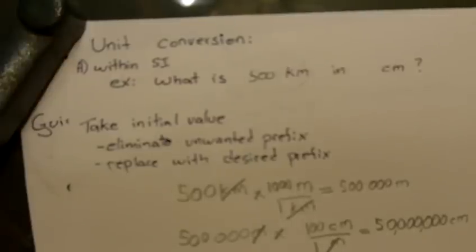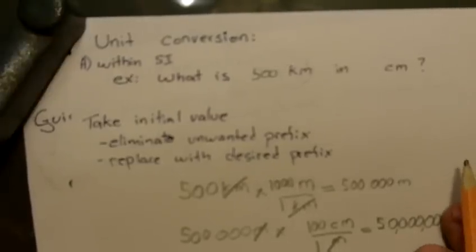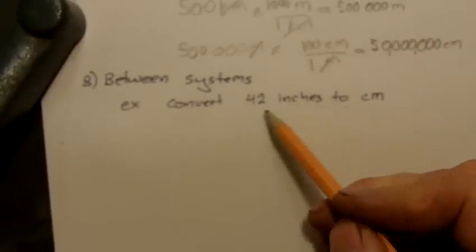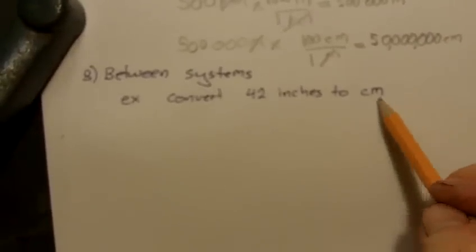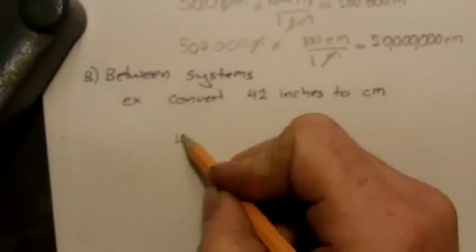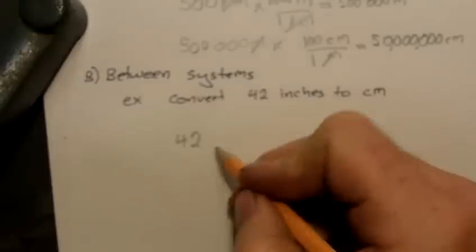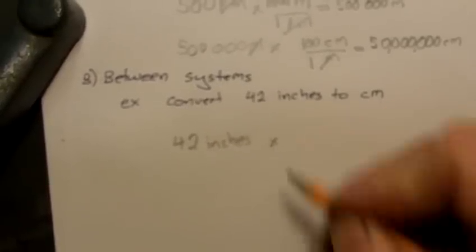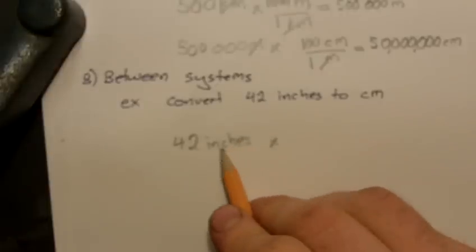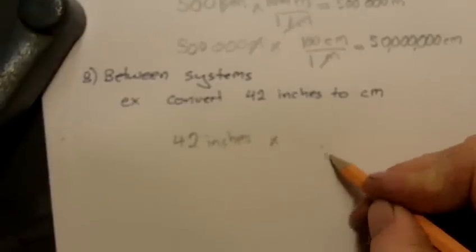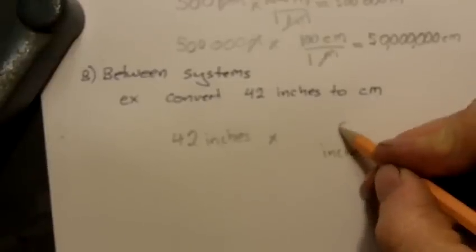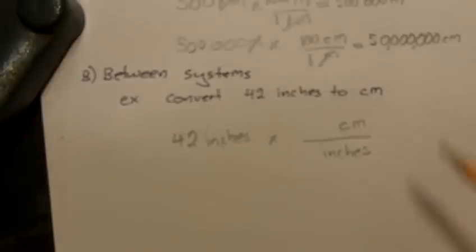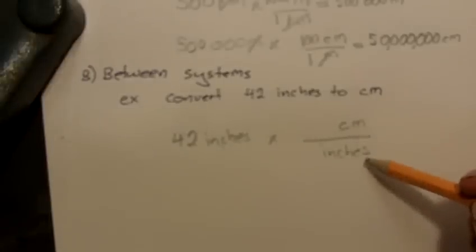Okay, so that's the relatively straightforward unit conversion. If we want to convert between systems, for example, if we want to convert 42 inches into centimeters, we do a very similar thing. We take our initial measurement. We multiply it by a fraction where the unwanted is on the bottom, and the desired one is on top. The key is we need to know how many centimeters there are per inch.